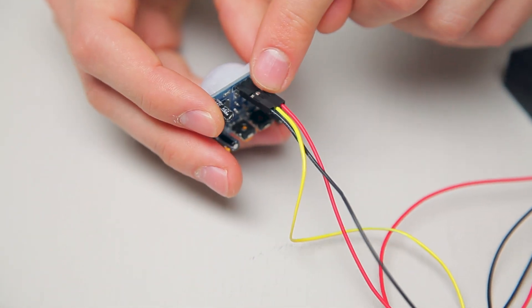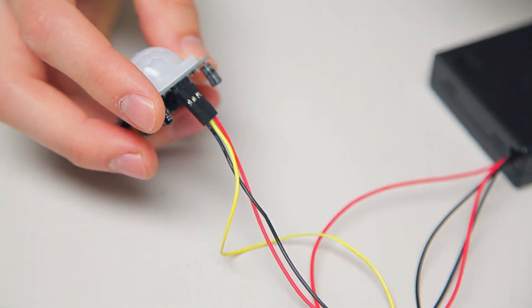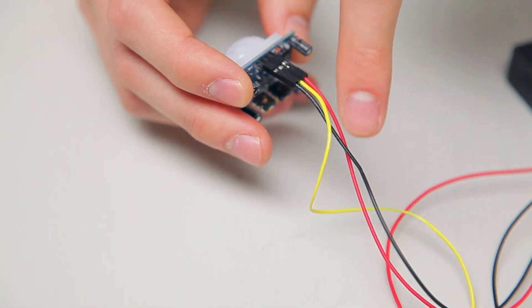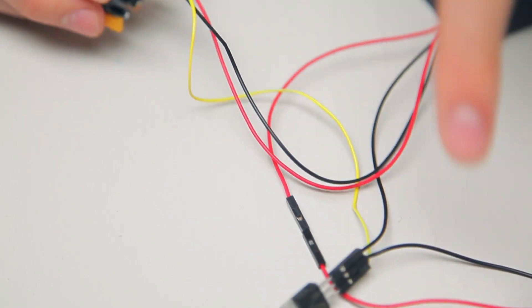Now the third wire is the signal wire. So when your sensor senses someone moving, it actually shoots a signal down through the yellow wire to our other interesting component in the circuit.